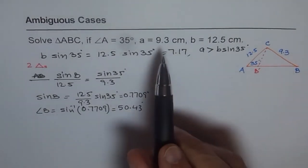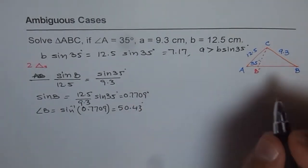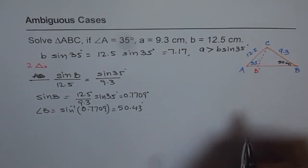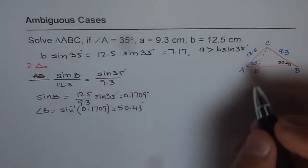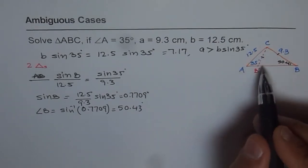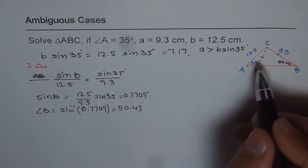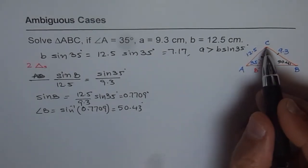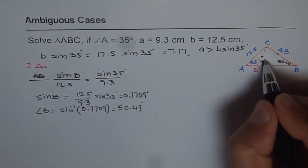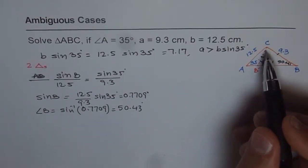Angle B equals sine inverse of 0.7709, which gives us 50.43 degrees. Rounding to 1 decimal place, angle B equals 50.4 degrees. Now since we know there are 2 triangles formed, this side should equal 9.3, giving us an isosceles triangle CBB dash. Since it is isosceles, both base angles are equal, so this angle will also be 50.4 degrees.